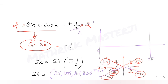Since we need 2x over the full range [0, 4π] (i.e., [0°, 720°]), we also add 360° to each angle to get the second cycle: 390°, 510°, 570°, and 690°. This gives us 8 angles total for 2x.